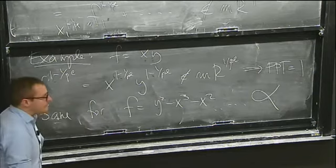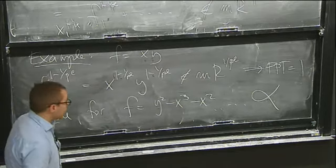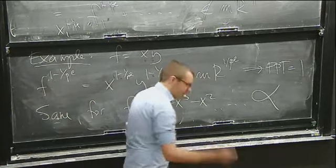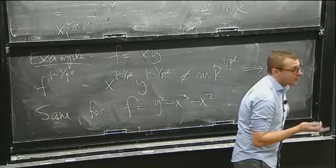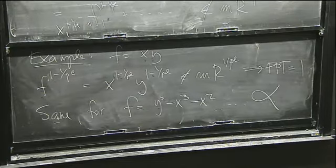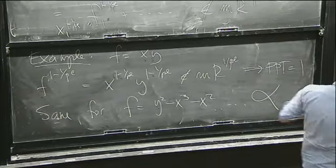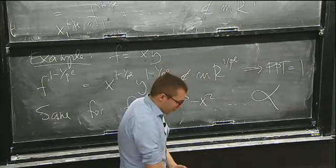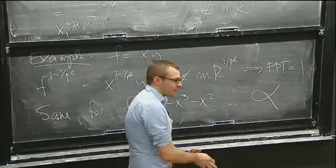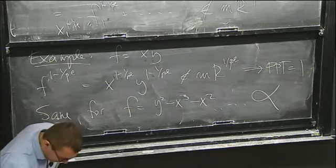Is it always the case for an ordinary singularity that the F-pure threshold is 1? If f defines an ordinary singularity, then Mircea is going to tell us the answer, I believe. The word 'ordinary' is throwing me off. If we're talking about an ordinary prime for a variety, then the answer is yes. But again, we're not doing reduction mod p here.